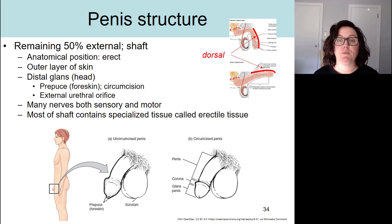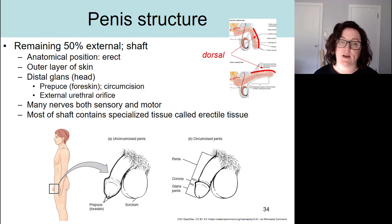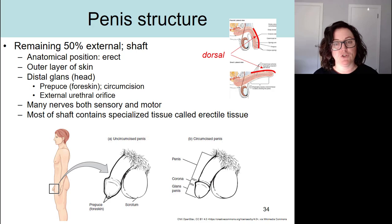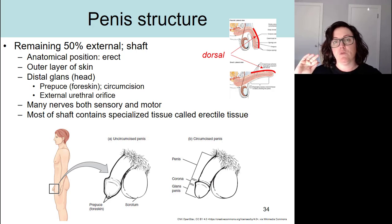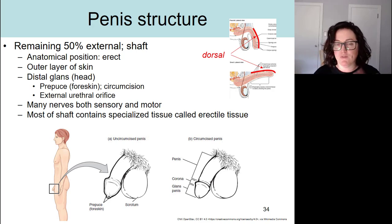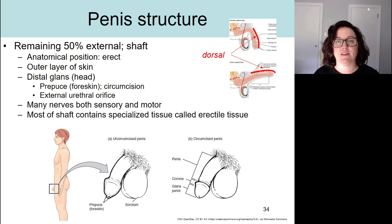The remaining 50% of the penis is external and it's referred to as the shaft. Don't forget that in anatomical position, the shaft of the penis is erect. This is important because when it comes to studying certain parts of the penis, we're going to use the terms dorsal and ventral, and it will be confusing if we don't remember that the penis is erect in anatomical position.